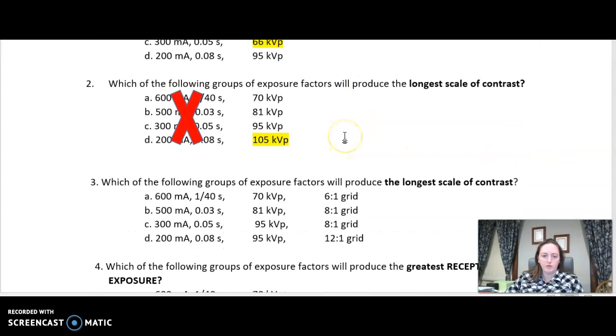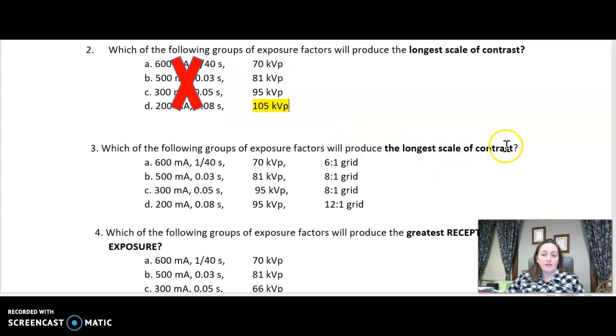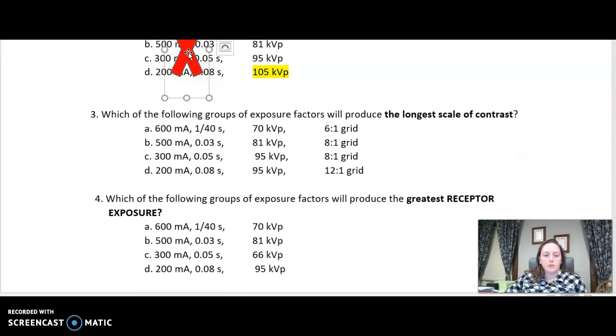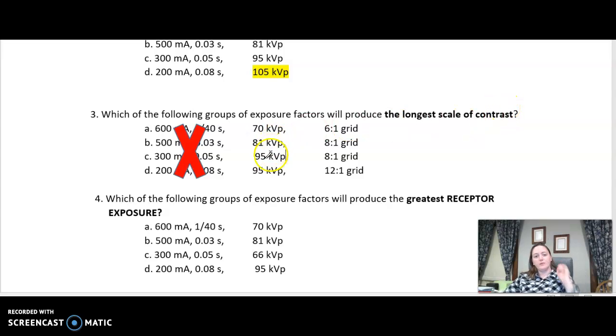Number three, I threw a little bit more fun in the mix here. It's again asking me for longest scale of contrast. So friends, do we care about MAS for contrast? No, we don't. So ignore the MAS. Do I care about KVP for contrast? Yes, I do. Long scale of contrast. Is that high or low? High. The trick here is there's two with 95 KVPs. Those are both high KVP. They're going to give me a long scale of contrast. But now I have a grid factor. So remember, grid factors, the higher the grid, the more lead lines. The more lead lines, the more scatter it cleans up, the more it improves the contrast of your image.